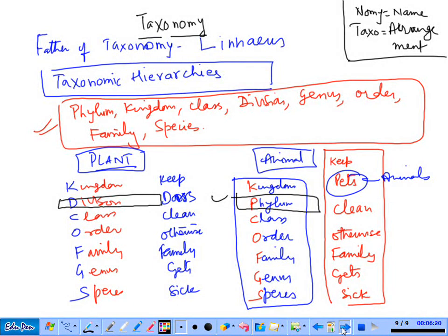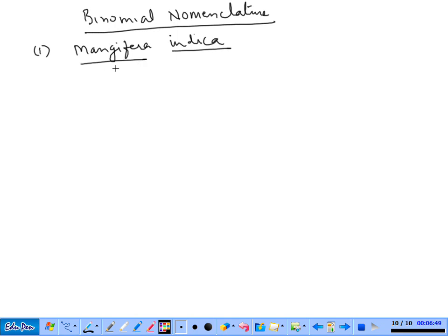Now we will study binomial nomenclature - two names. As we say Mangifera indica. The M is capital and I is small letter. Binomial nomenclature means separately underline each name.